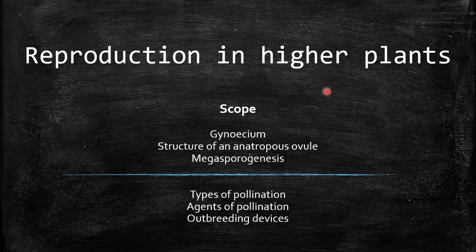Hello everyone. Today we will be learning about reproduction in higher plants. In this video we will be learning about the gynecium, the structure of an anatropous ovule, the development of a female gametophyte as well as the generation of megaspores. Along with that we will also be learning about the types of pollination, the different agents of pollination, and the different outbreeding devices plants employ.